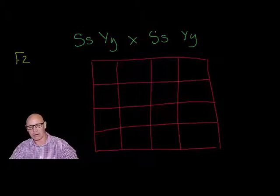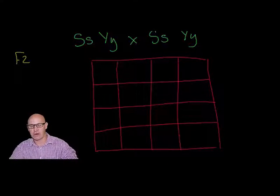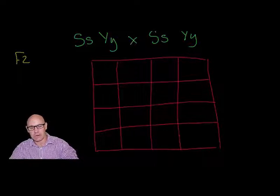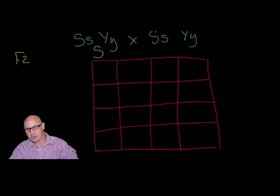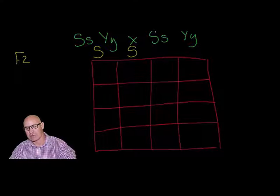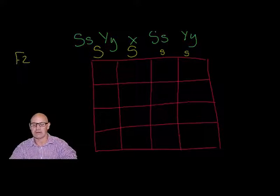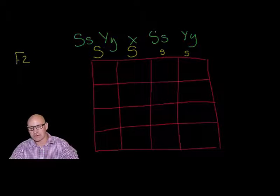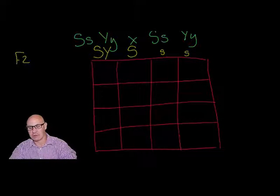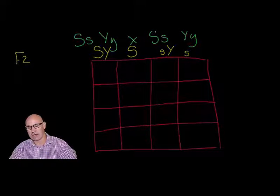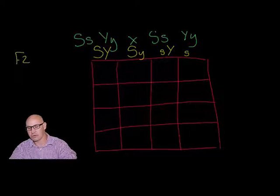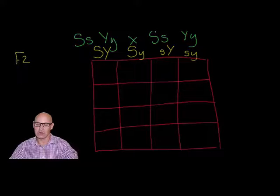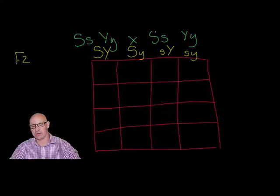We actually have four different allele combinations for both parents. Two of them will have capital S and two will have small s. One combination is capital S, capital Y; another is small s, capital Y; one is capital S, small y; and one is small s, small y. Those are the four options the parent can provide, and the same four options apply to the other parent.